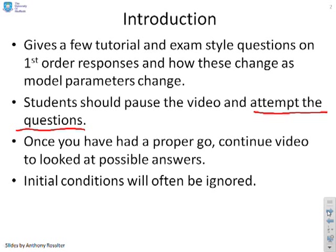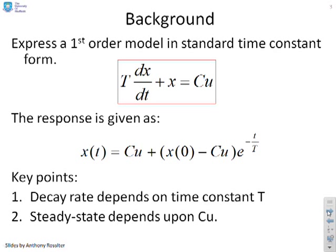Some background first. The focus here is on first-order models. In this box we've summarised a standard time constant form for a first-order model: τ dx/dt + x = cu.